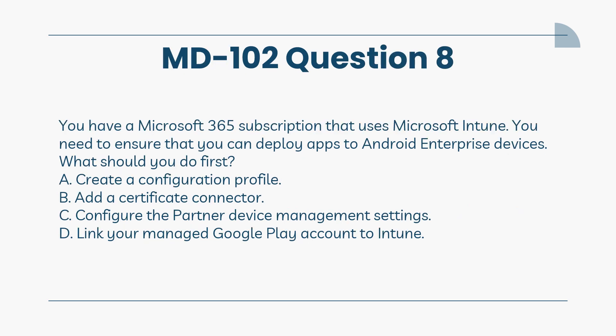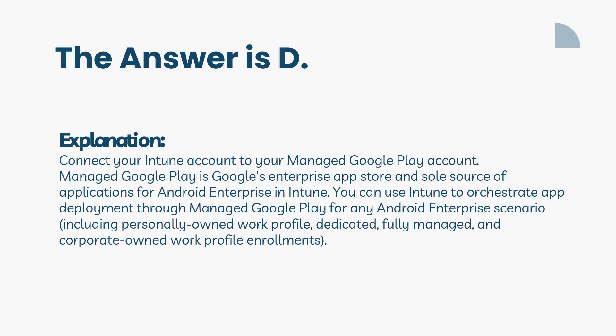You have a Microsoft 365 subscription that uses Microsoft Intune. You need to ensure that you can deploy apps to Android Enterprise devices. What should you do first? A. Create a configuration profile. B. Add a certificate connector. C. Configure the partner device management settings. D. Link your Managed Google Play account to Intune. The answer is D. Managed Google Play is Google's enterprise app store and sole source of applications for Android Enterprise in Intune. You can use Intune to orchestrate app deployment through Managed Google Play for any Android Enterprise scenario, including personally owned work profile, dedicated, fully managed, and corporate-owned work profile enrollments.